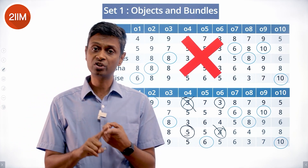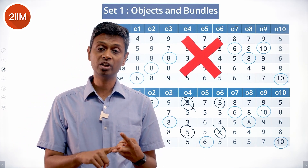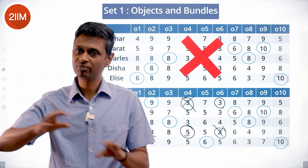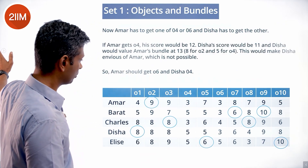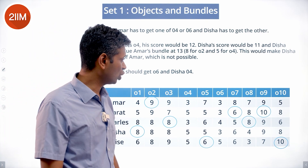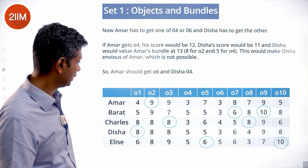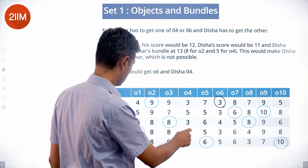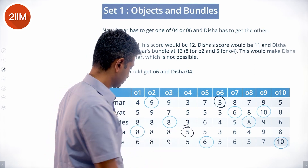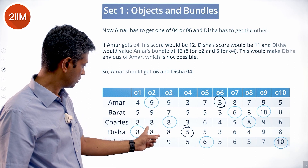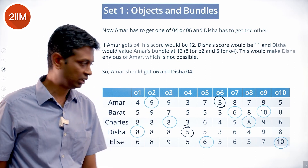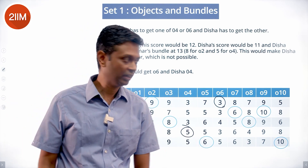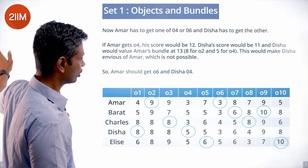This solution satisfies all conditions: no one with a score of 16 envies anyone else, no sub-16 person envies another sub-16 person, and some sub-16 people envy some 16s — which is allowed. So this is the valid distribution. Amar has got O2 and O6, Disha has got O1 and O4. We've got the whole grid filled out and can answer questions from here.